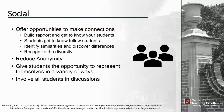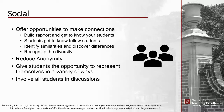For the social area, you want to offer opportunities to make connections for your students. This includes building rapport and getting to know them, students getting to know other students, identifying similarities and discovering differences with a focus on common interests, recognizing diversity, and expecting a growth mindset. You want to reduce anonymity — one method is learning students' names and helping them learn each other's names. Give students the opportunity to represent themselves in a variety of ways, and involve all students in discussions.